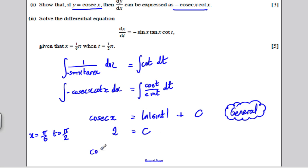And hence, the general solution, or the particular solution even, is cosec x must be equal to ln, or the modulus of sine of t, plus the constant of integration, which is 2.